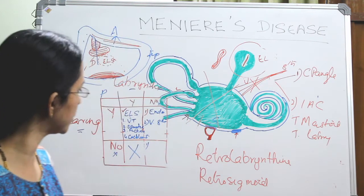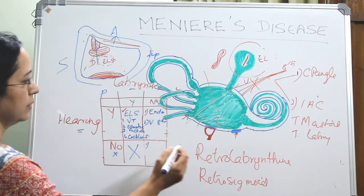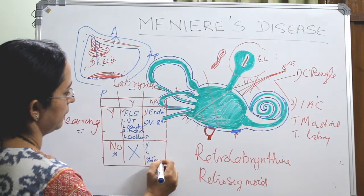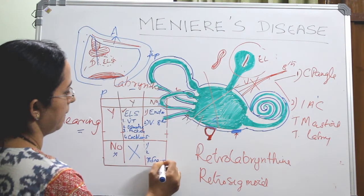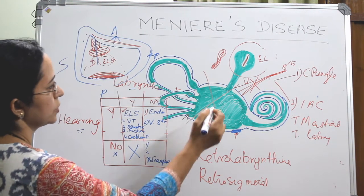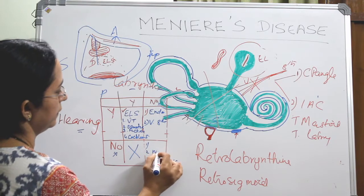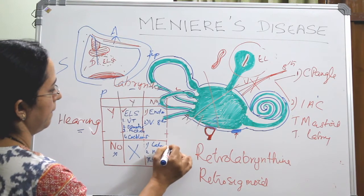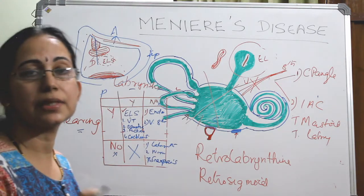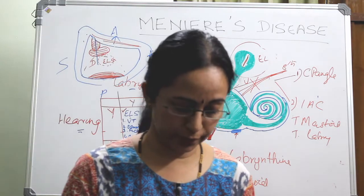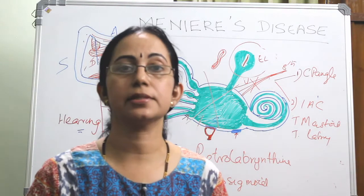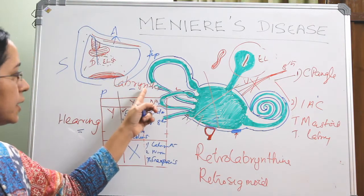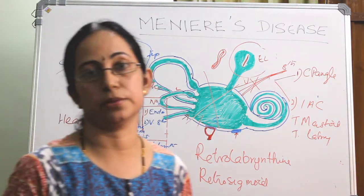Another option is translabyrinthine vestibular neurectomy. Translabyrinthine is considered a destructive process and is the gold standard if you want to completely eliminate both vertigo and hearing. Translabyrinthine vestibular neurectomy is the gold standard in treatment. Also there is destruction of the Scarpa's ganglion. These are the surgeries done for Meniere's disease, classified by hearing preservation and preservation of labyrinthine function.